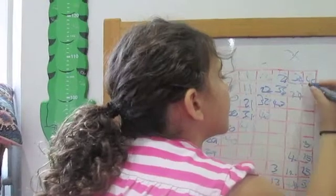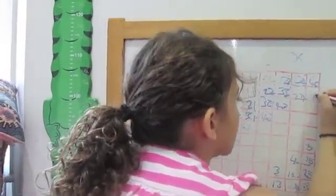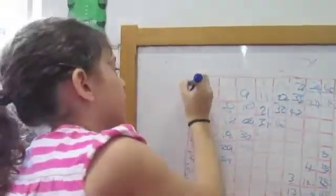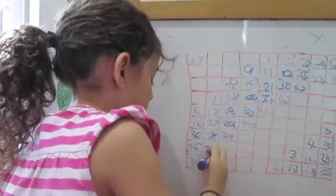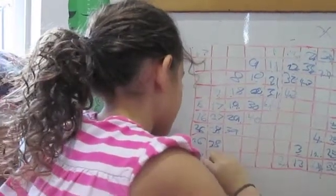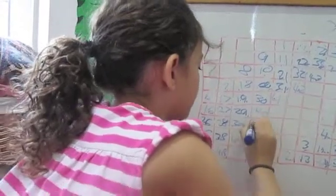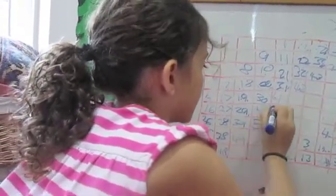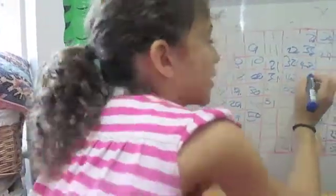So, forty-six goes here. Forty-seven can go here. Forty-eight can go here. Forty-nine can go here. Fifty can go here. Fifty-one can go here. Fifty-two can go here.